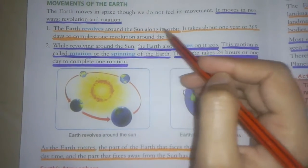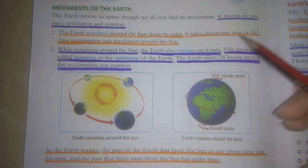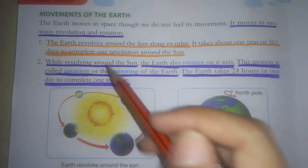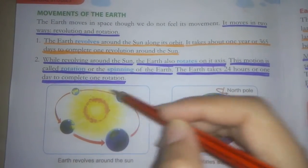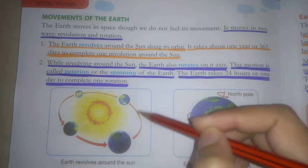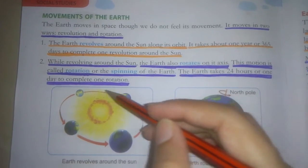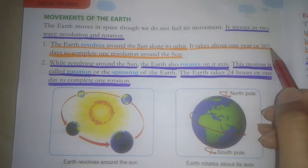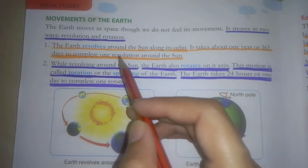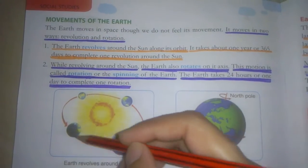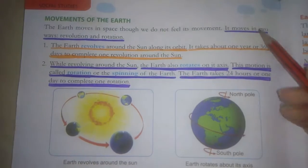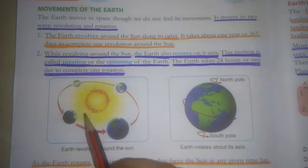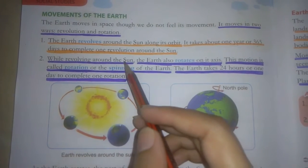What is revolution? The earth revolves around the sun along its orbit. It takes about one year or 365 days to complete one revolution around the sun. Earth revolves around the sun. Here is the picture. Here the earth revolves around the sun.